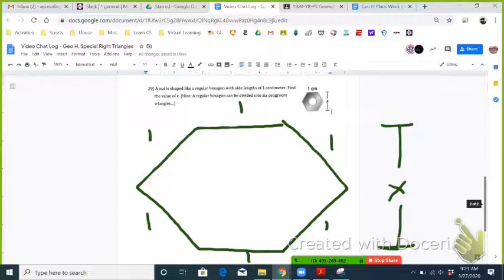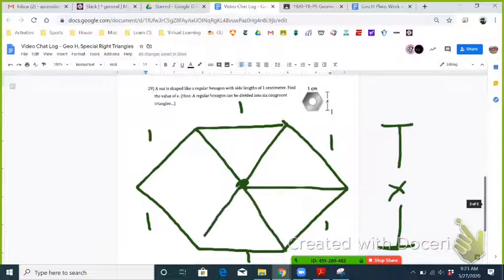The way you do that is you divide it from the middle into triangles by going from the center of the regular polygon to each vertex, and you can divide it up into congruent triangles.